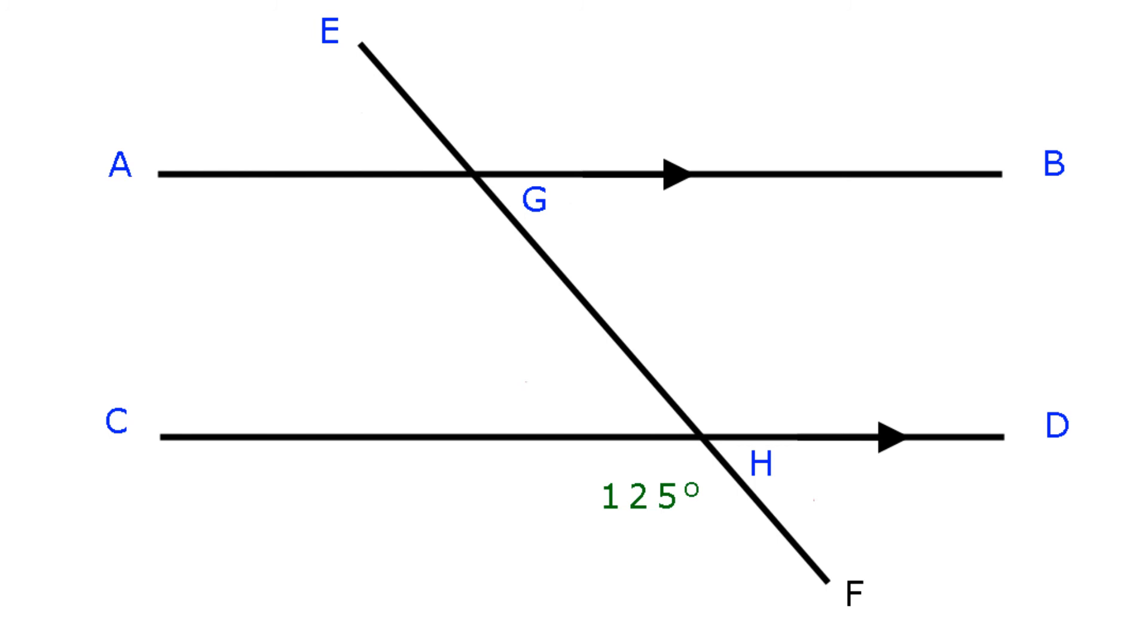In the diagram, angle CHF is 125 degrees. Find the value of each angle. Okay, well here goes. Angle GHD equals angle CHF, vertically opposite angles. Therefore angle GHD equals 125 degrees.